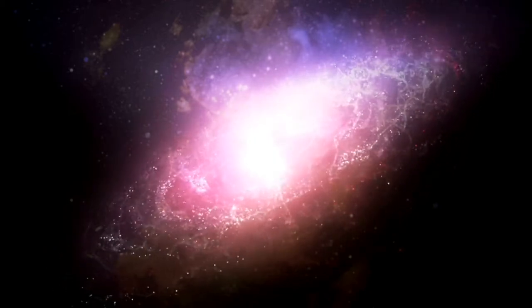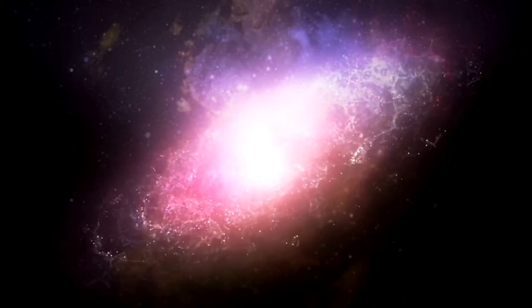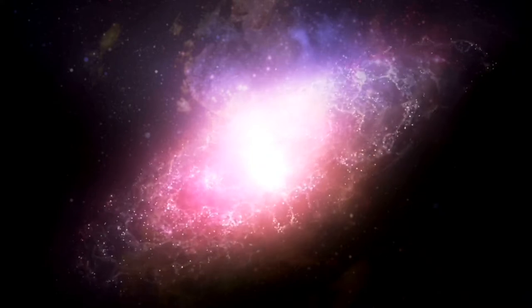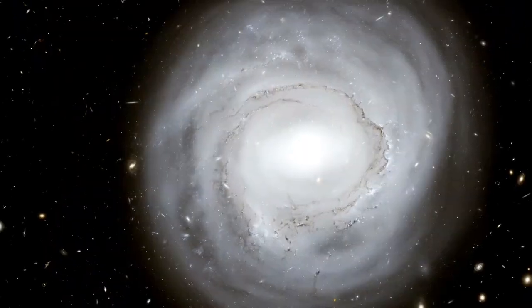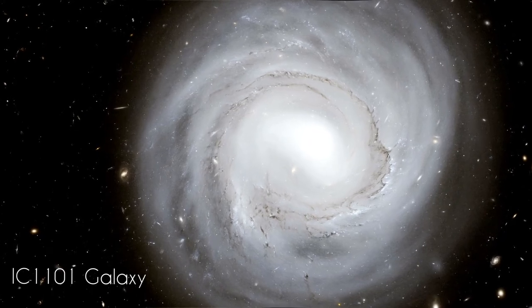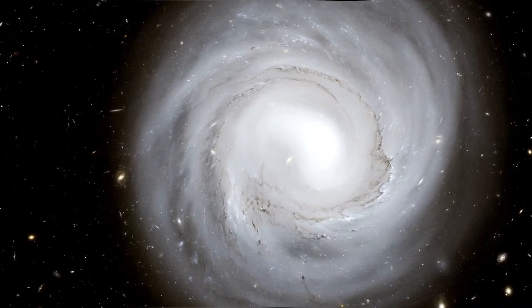Elliptical galaxies also come in many sizes. The largest galaxies we see are ellipticals, but elliptical galaxies can also be small. IC 1101, one of the largest galaxies in the observable universe, is an example of an elliptical galaxy.